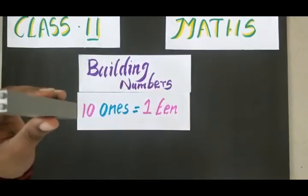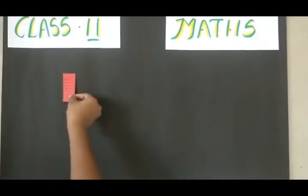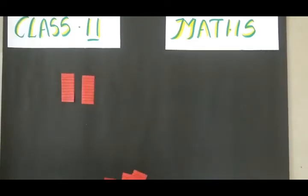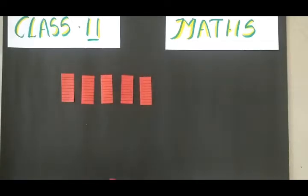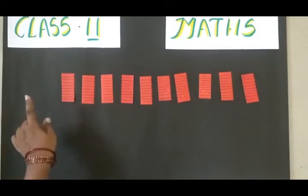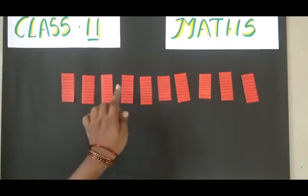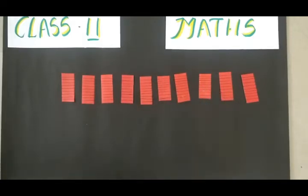Here I am using the steps to represent one ten. Now I am going to place one ten, two ten, three ten, four ten, five ten, six ten, seven ten, eight ten, nine ten, and ten ten. One ten is equal to ten, two ten is twenty, three ten thirty, four ten forty, fifty, sixty, seventy, eighty, ninety, and hundred.